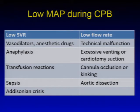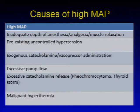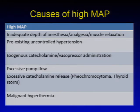Low flow rate may be related to technical malfunction of CPB, excessive venting or cardiotomy suction, cannula occlusion or kinking, or aortic dissection. High MAP during bypass may be caused by inadequate depth of anesthesia, analgesia, or muscle relaxation; pre-existing uncontrolled hypertension; exogenous catecholamine or vasopressor administration; excessive pump flow; catecholamine release from pheochromocytoma or thyroid toxic crisis; or rarely malignant hyperthermia.